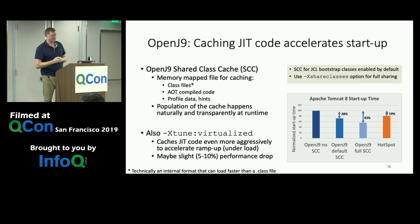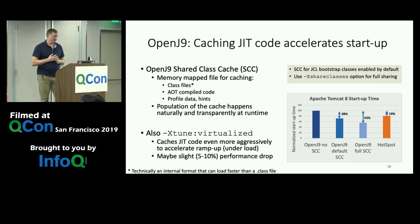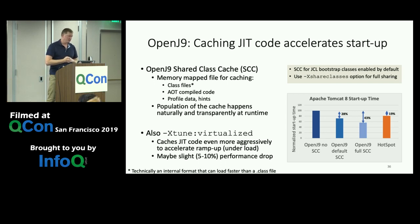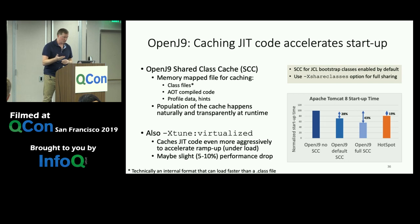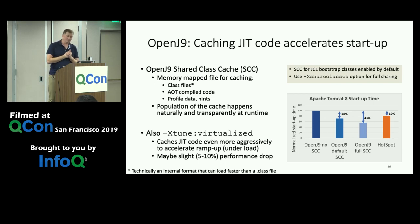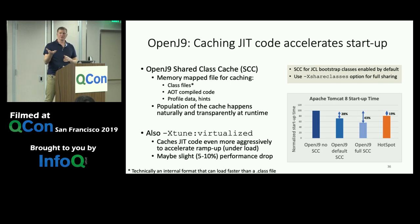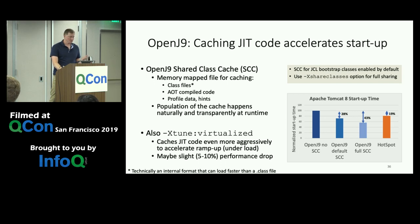A graph shows Tomcat starting up with OpenJ9. With sharing fully disabled, that's the normalized 100% baseline. HotSpot does some class sharing by default, giving a 19% boost. With the new OpenJ9 default shared class cache, there's a 28% boost. And with the explicit -Xshareclasses option, you get a 43% startup performance improvement for the Tomcat server.